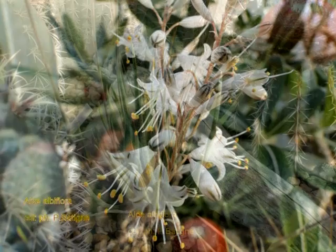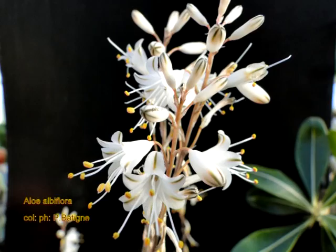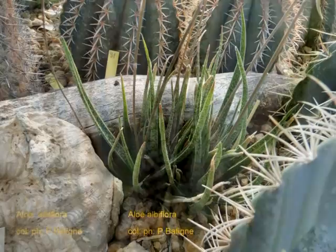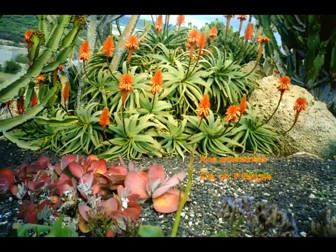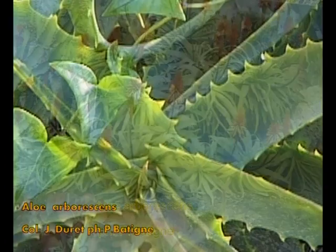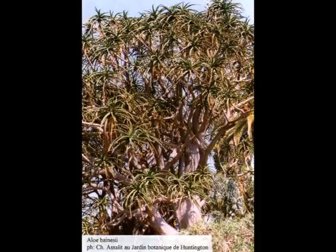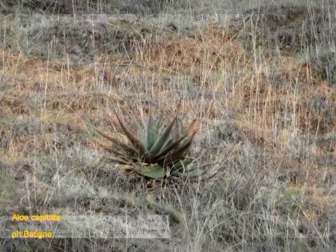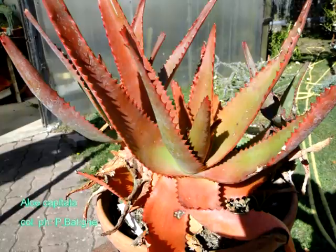Pourtant, il est très facile de les reconnaître. Il s'agit simplement de sectionner une feuille pour s'apercevoir que les aloés n'ont pas de fibres dans les feuilles. L'intérieur de ces feuilles n'est simplement que la réserve de sucre du genre aloé, ce qui la classe parmi les plantes succulentes, alors que les feuilles des agavacées ont toutes un très grand nombre de fibres, ce qui classe cette famille parmi les plantes xérophytes.